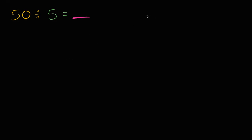Well, whatever blank is, if you multiply it by 5, you should get 50. So one way of thinking about it, you could say what times 5 is 50? Well, 10 times 5 is 50. So 50 divided by 5 is going to be 10.